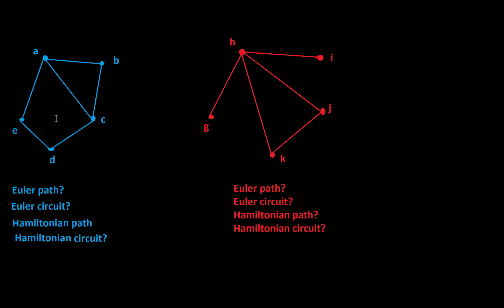In other words, can we travel around the graph visiting each edge only once? So we don't want to leave out edges and we don't want to double cross the edges. We want to go on every edge, but only once.